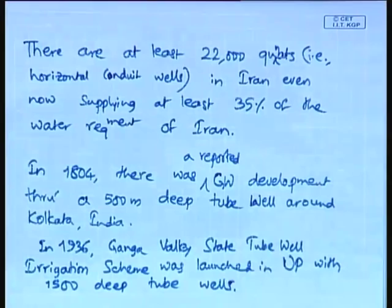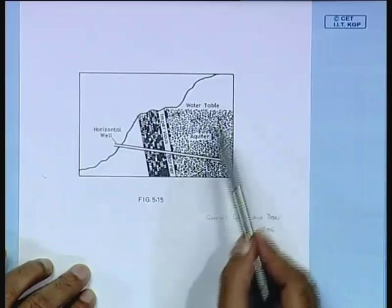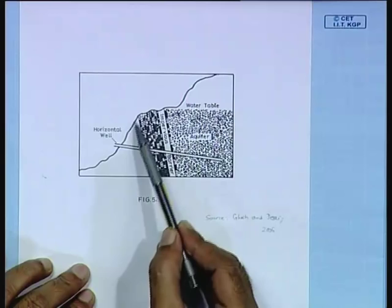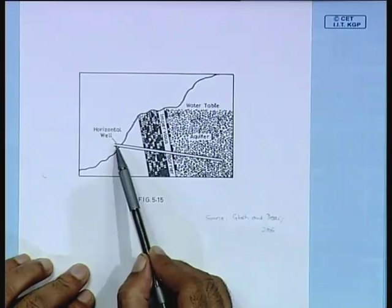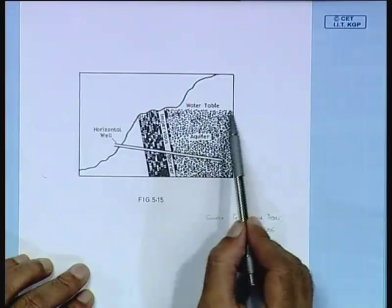Let me also show you an example of a horizontal well. As you can see, there is an aquifer with a water table, a sloping side, and the aquifer is bounded by an impervious barrier and some rock formations. Through this setup, there is a horizontal well, and depending upon the water table, groundwater can be harnessed through this horizontal well.